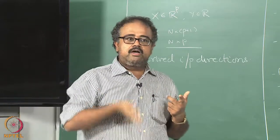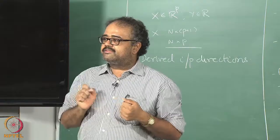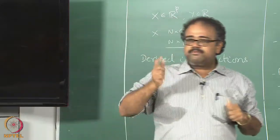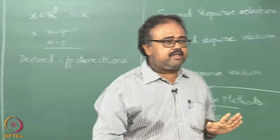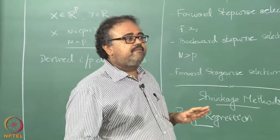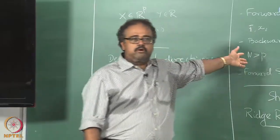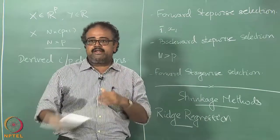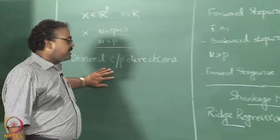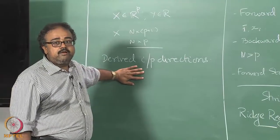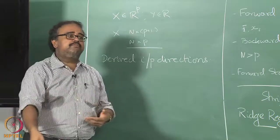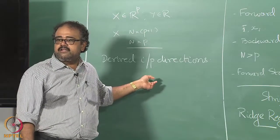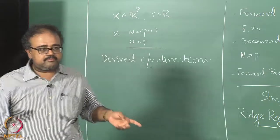At all points we were operating with the original basis vectors — the columns of the X matrix are the basis vectors. In subset selection we picked some columns and threw out others. In shrinkage we continuously adjusted the weights of the columns. When we talk about derived input directions, we are not going to stick with the original columns — we are going to find a new set of features, new set of directions, which we will then use for doing the regression.